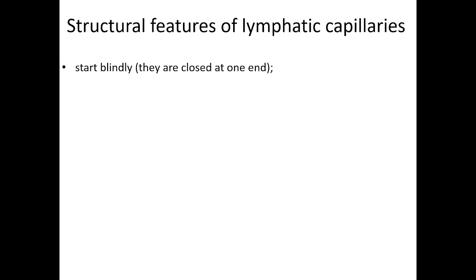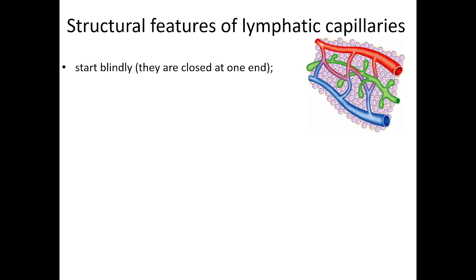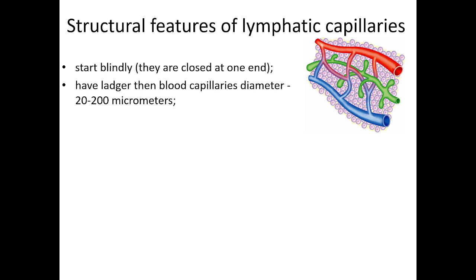Structural features of lymphatic capillaries. First, the lymphatic capillaries start blindly — they are closed at one end. We can see multiple lymphatic capillaries in the interstitial space between blood capillaries; they are closed at one side and appear immersed in the interstitial space. In comparison, blood capillaries are open on both sides and are connected to arterioles and venules.